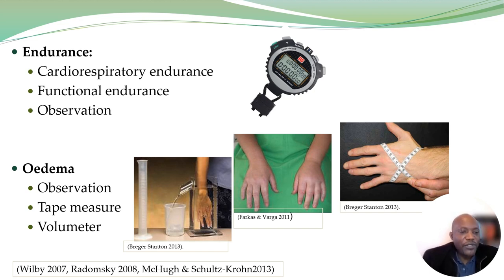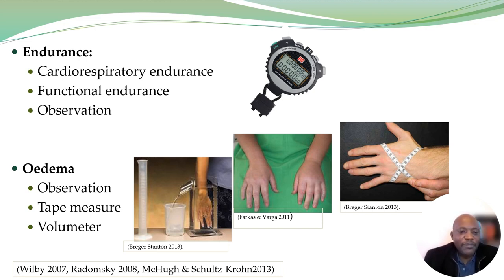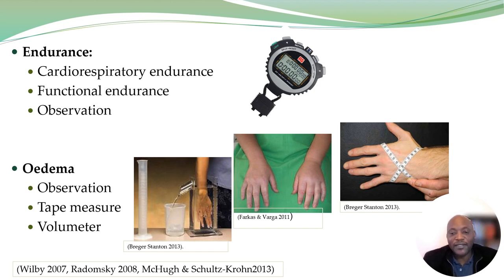We can also measure edema using a volumeter. A volumeter is equipment filled with water until no more water is dripping, and then the swollen hand is brought in. The water displaced by the swollen hand is collected and measured in milliliters. When intervention has been provided and you want to reassess, you can repeat the same process and compare the initial reading to the post-intervention reading to see if you're making a difference in the patient's swelling.